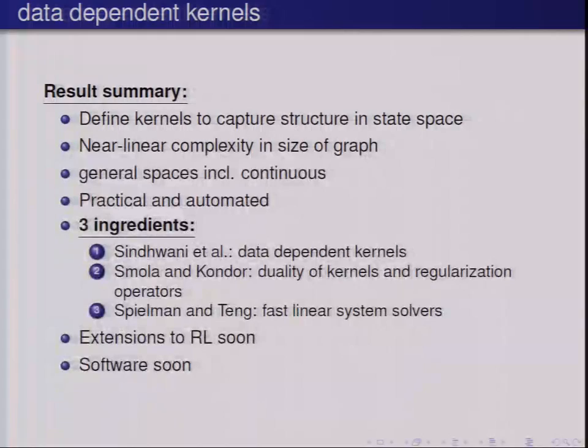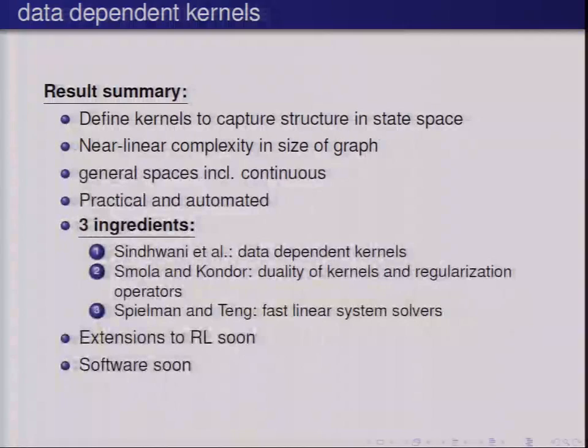One thing you could try is selecting support vectors — doing one training pass and then taking the support vectors from the classifier as landmarks, then doing another training based on that. Though it's a representation specific to the classification problem, whether it would work better or worse would be an interesting question.